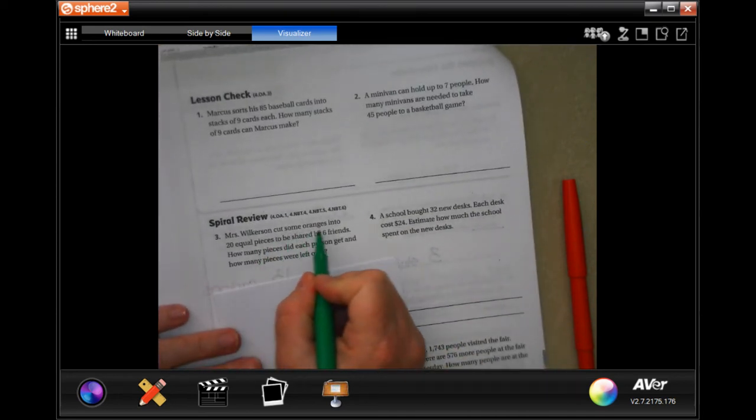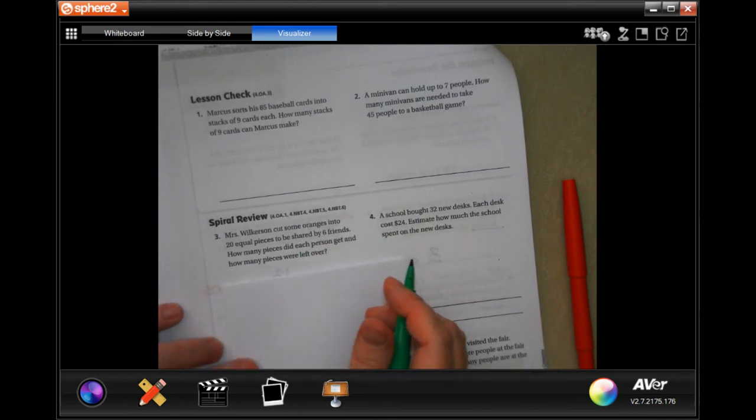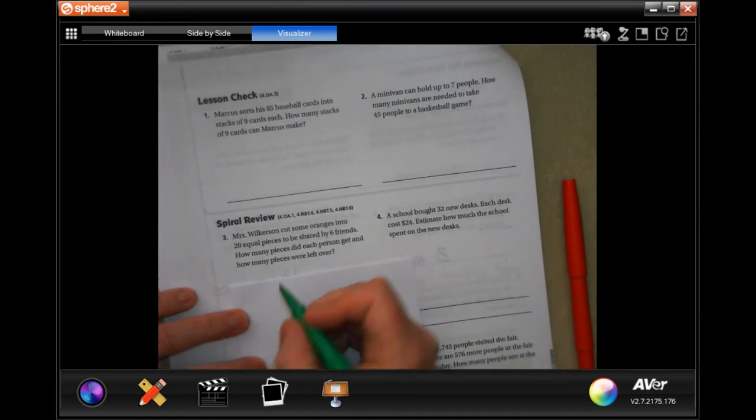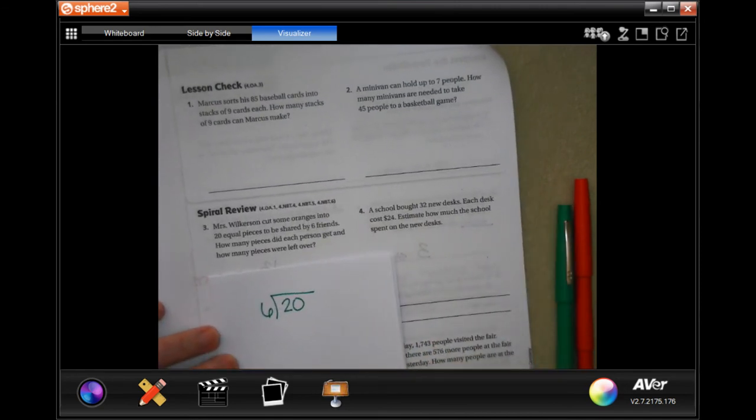Ms. Wilkerson cut some oranges into 20 equal pieces to be shared by 6 friends. How many pieces did each person get? And how many pieces were left over? Ms. Wilkerson sneezed. So, 20 pieces, 6 friends. Let's do it.